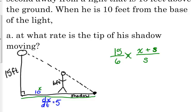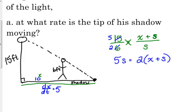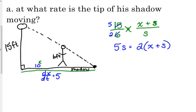So let's cross multiply, so we don't have to use the quotient rule. Fifteen s is equal to, or actually, you know what, reduce that fraction first. Fifteen over six reduces by three. So we're at five over two. Five s is equal to two, I'm just going to leave the two in front. Let's take the derivative. Five ds over dt is equal to two times dx over dt, plus ds over dt.